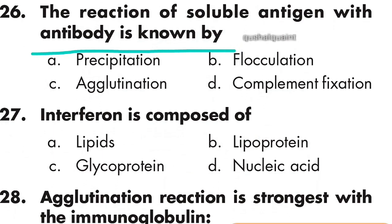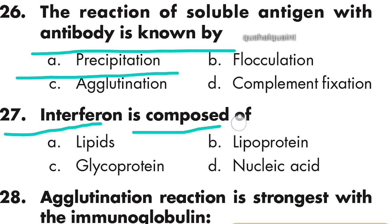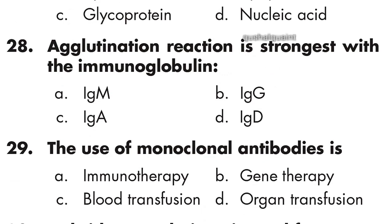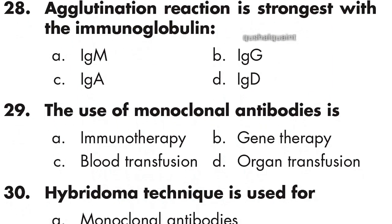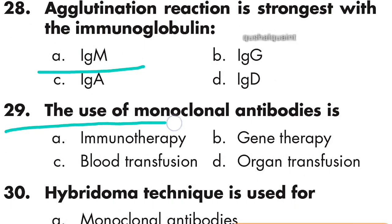Question 27: Interferon is composed of lipoprotein, option B is right. Question 28: Agglutination reaction is strongest with the immunoglobulin IgM, option A is right. Question 29: The use of monoclonal antibodies is immunotherapy, option A is right.